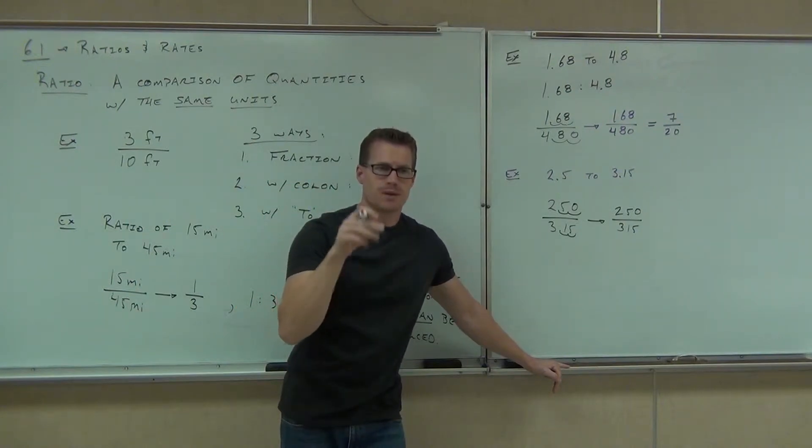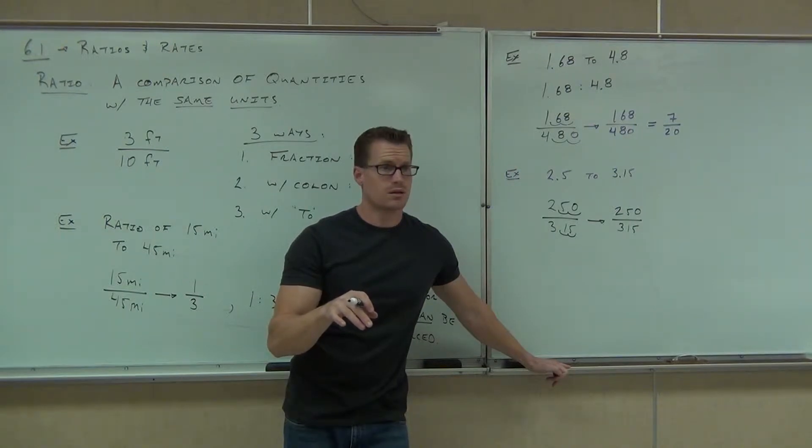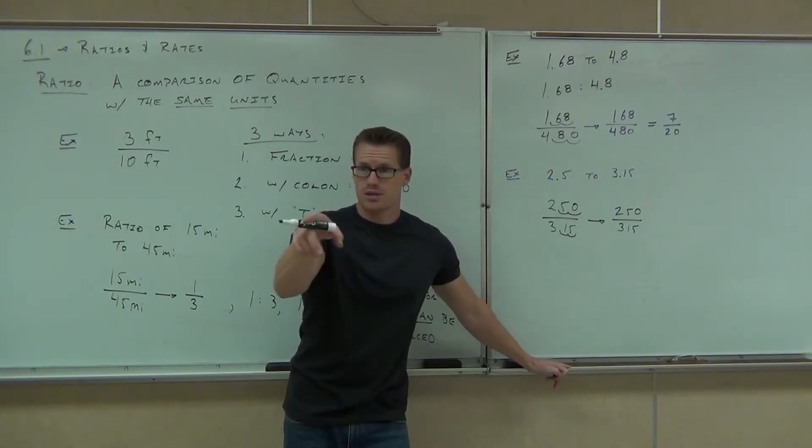Good deal. Now, you punch 250 fraction 315, not divide, that will give you decimal, but 250 fraction 315 and you press enter and that will give you your ratio. Did anyone do that? Yeah. What did you get? 50 over 63. Anybody else get 50 over 63?